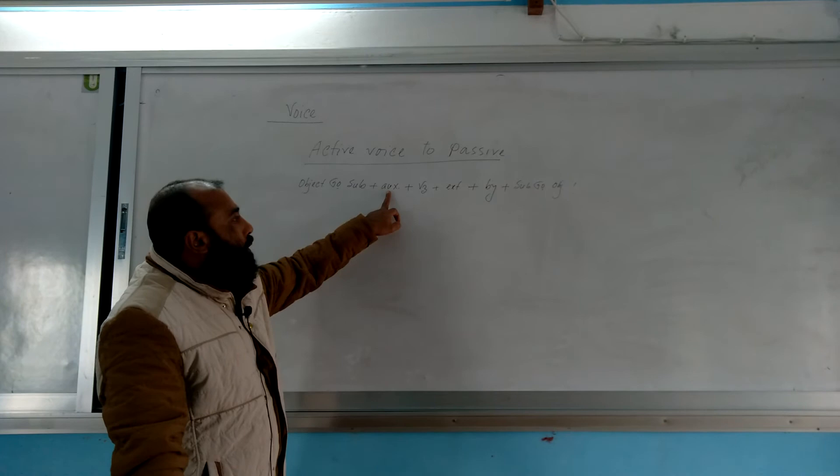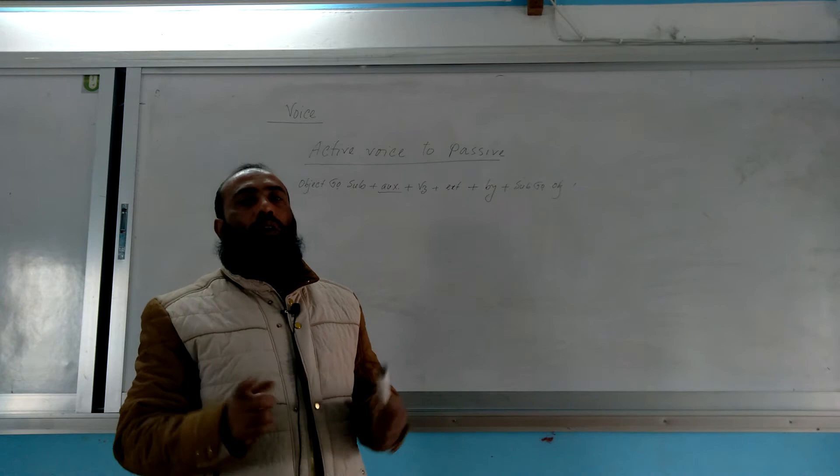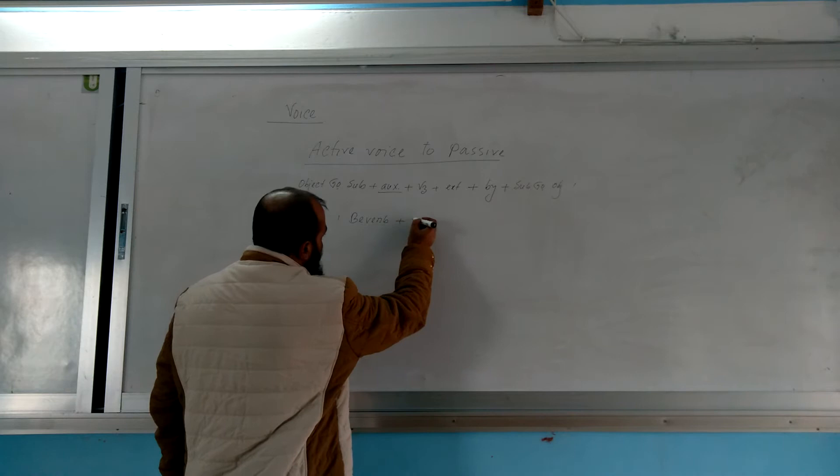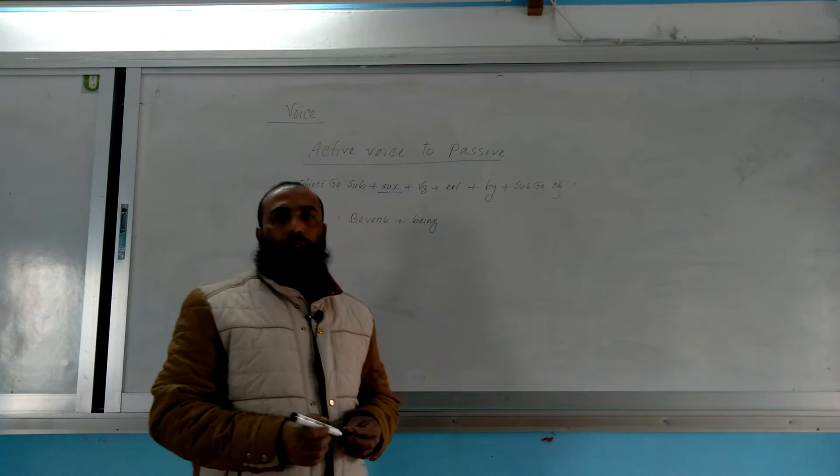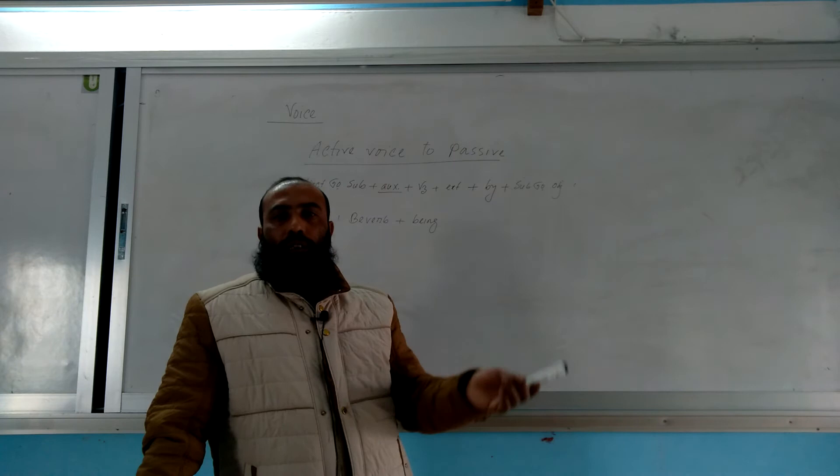So what about the auxiliary verb? If you have a sentence, you will face this auxiliary verb. Auxiliary verb is a be verb, so that we can use the auxiliary verb being. What is be verb? Am, is, are, was, were, be, been. That is, is becomes is being, was becomes was being, etc.